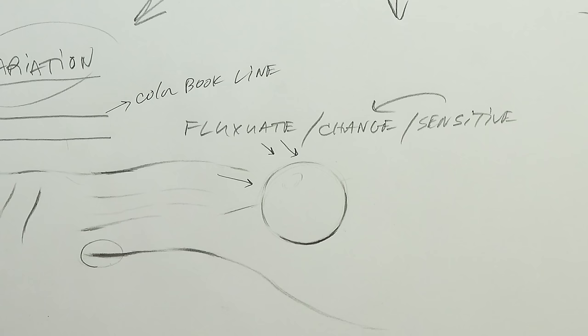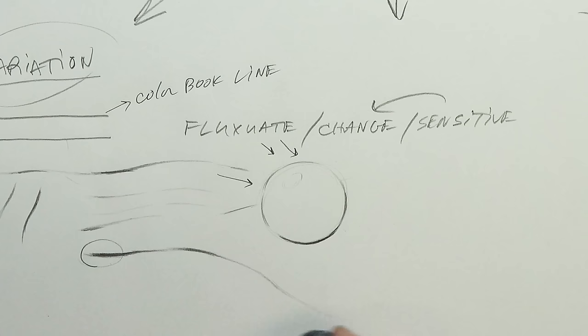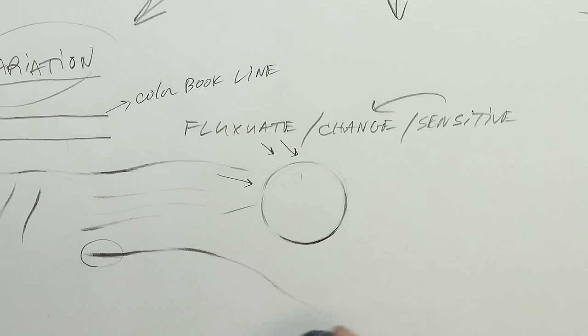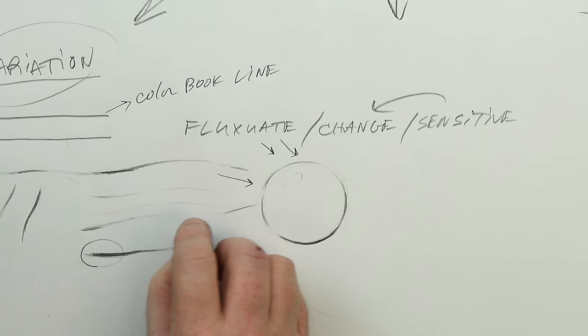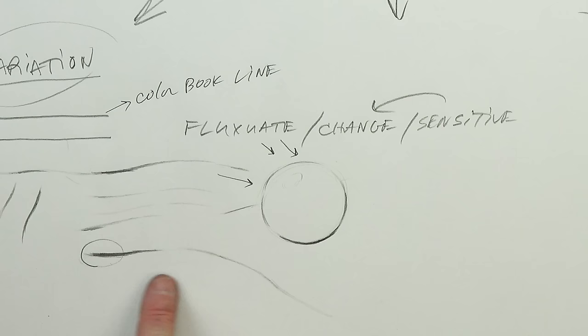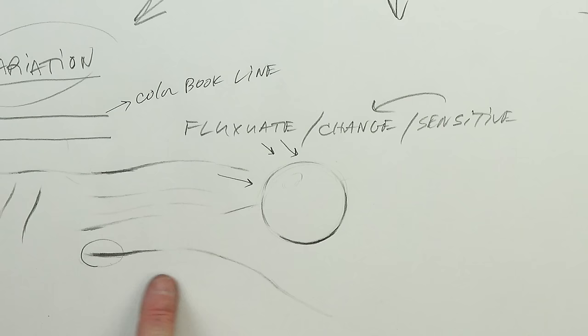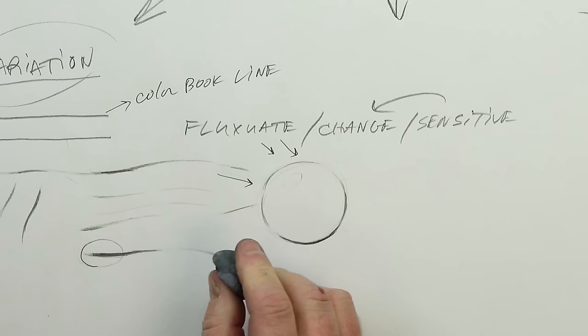You can take your kneaded eraser and dab at a line to pull graphite off. You can make a line disappear — if you wanted to make a contour line lighter, dab with the kneaded eraser and take quite a bit off. Don't drag too much because it can smear, but see how you can eliminate that. When you break up that line, it starts to lighten up, and you can show the actual illusion of light in your drawing.